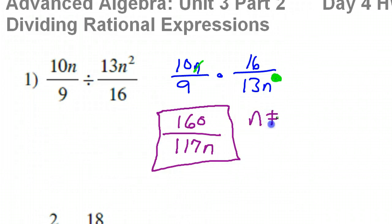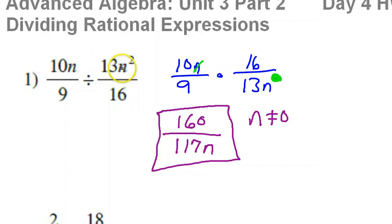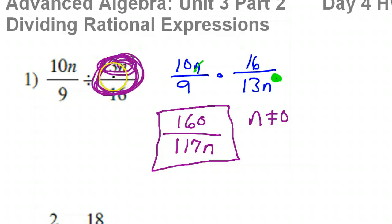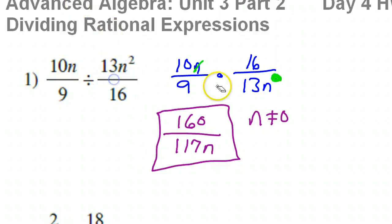Now the restrictions: n cannot equal 0. Remember, when you're dividing, neither the numerator nor the denominator can be 0. If n were 0, this would be 0, that would make this whole thing 0, and you can't divide by 0. So n cannot be 0.